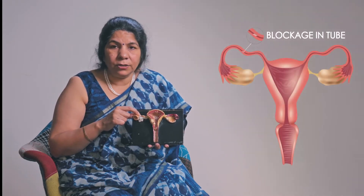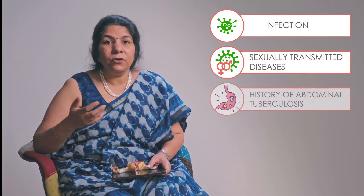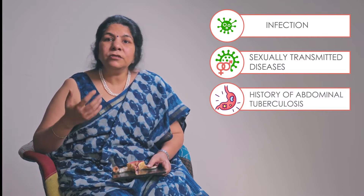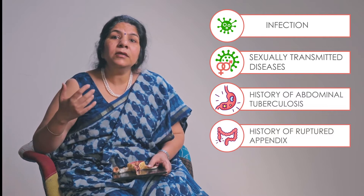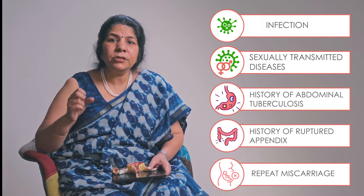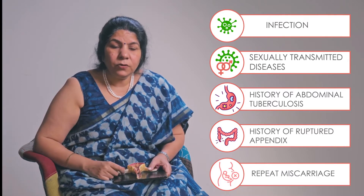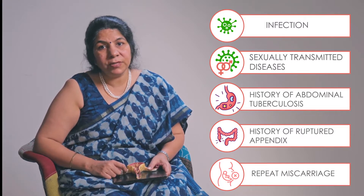Why does a tube get blocked? The most important reason for a tube to get blocked is infection. If there is a history of repeated infections — maybe a sexually transmitted disease, some sort of tuberculosis, abdominal tuberculosis, history of ruptured appendix, or a history of repeat miscarriages — these can sometimes lead to tubal blockage. In all these cases, the egg and sperm are not able to unite, and we say that the tubes are blocked.